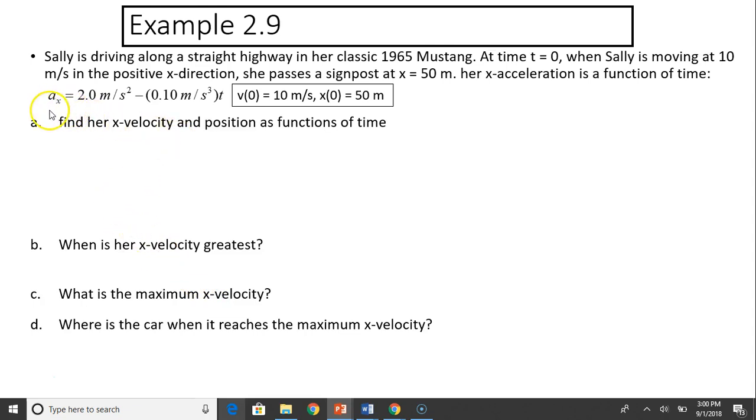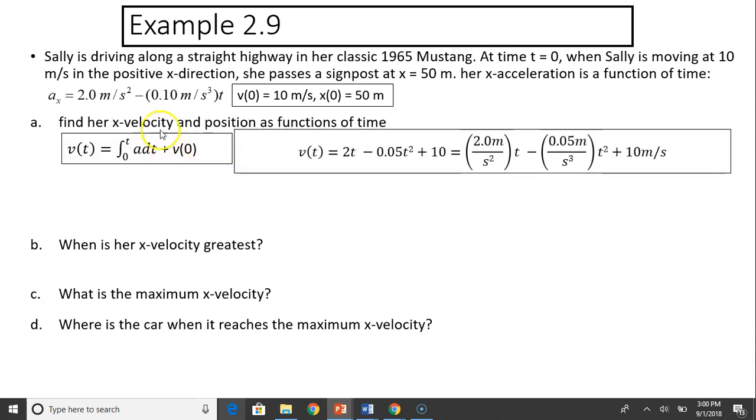Her velocity at time t is the integral of a dt. So v(t) equals integral from 0 to t of a dt plus the initial velocity. So after you integrate, this is just 2t minus 0.10 times 1/2 t². That becomes this. And the initial velocity is 10. So over here, I simply added the units.